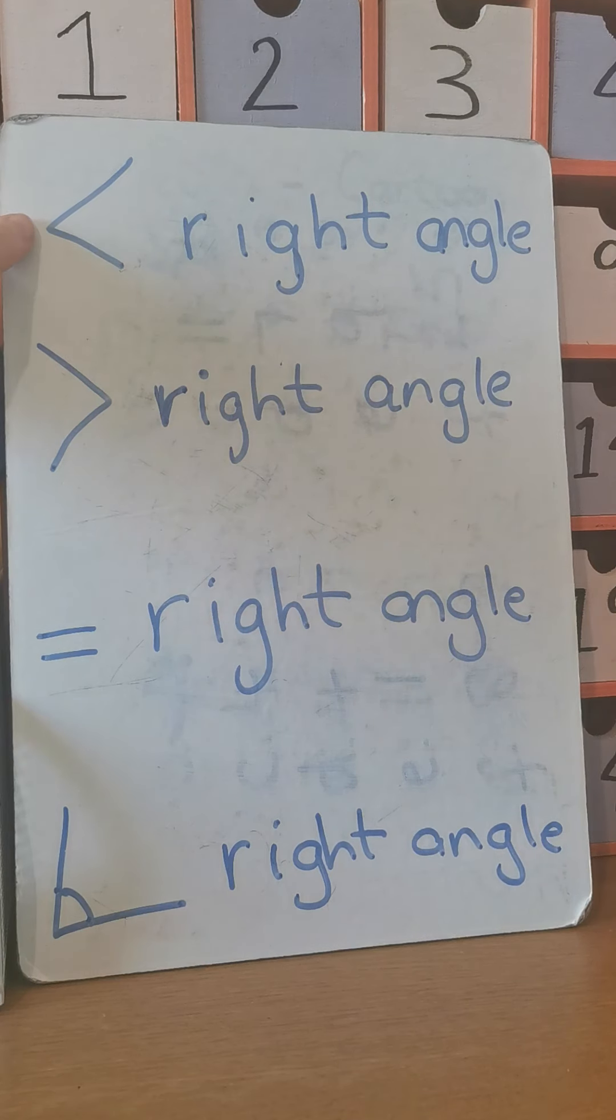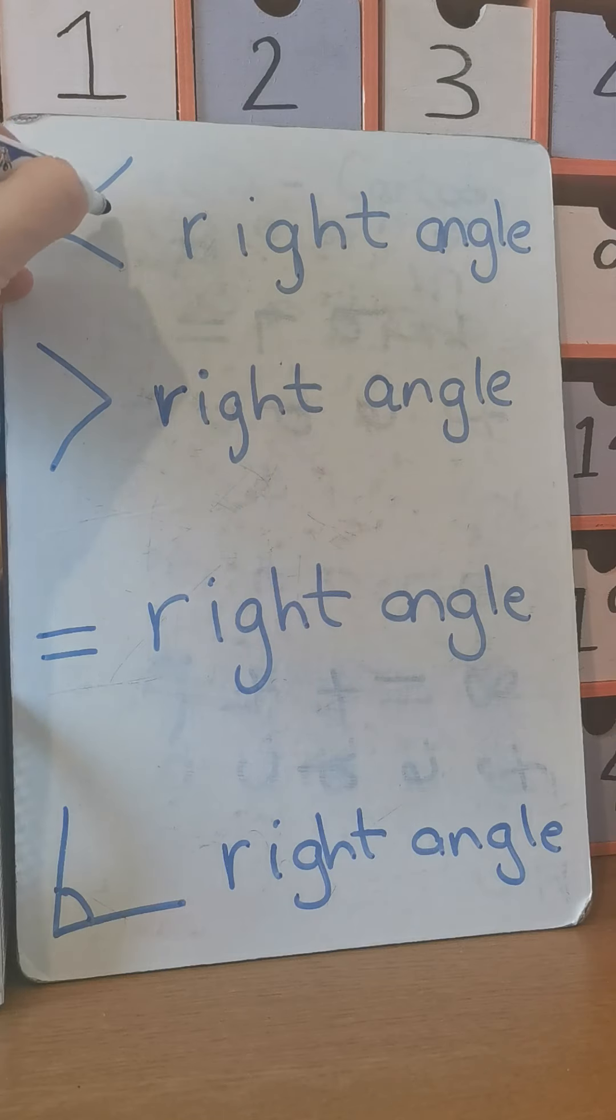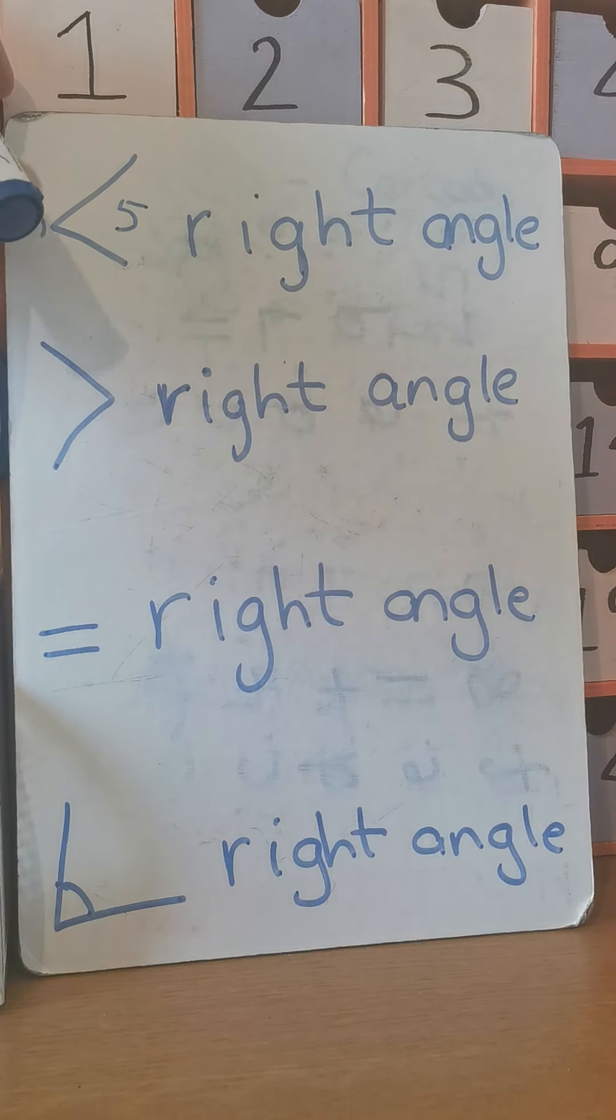This sign, when it starts with a small piece, means it's less than. Whatever is over this side is less than whatever is over this side. So you could have 3 is less than 5. That would be correct. The sign means less than.